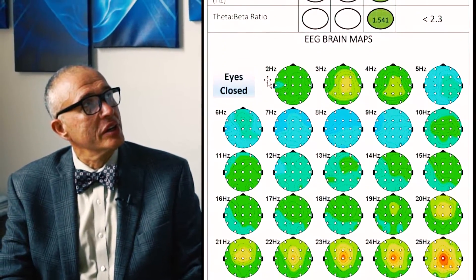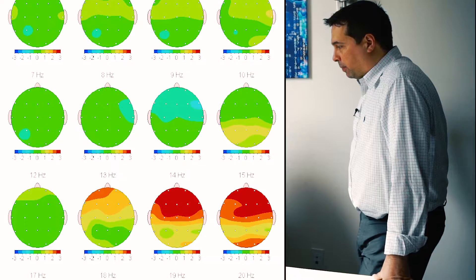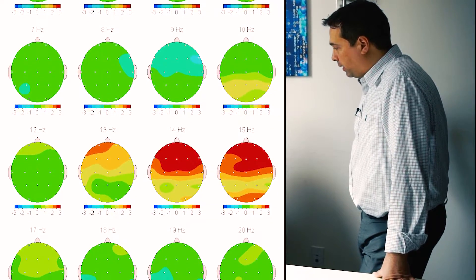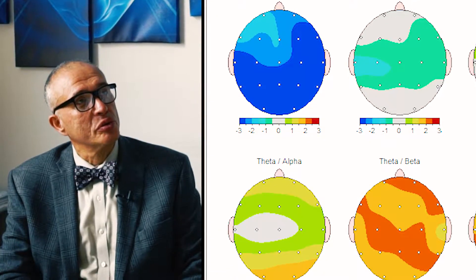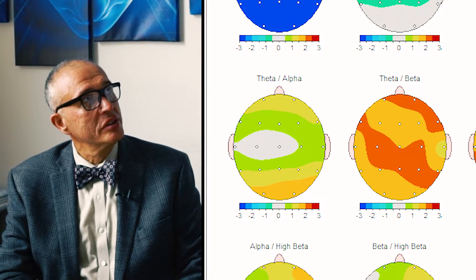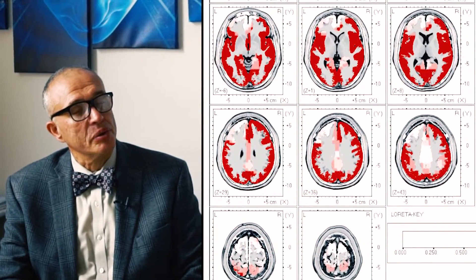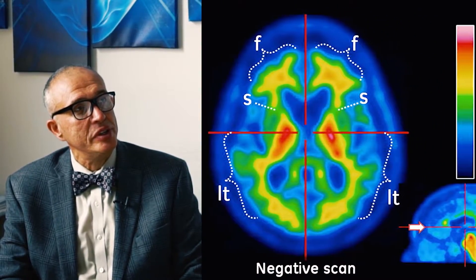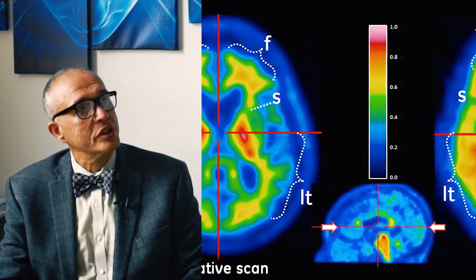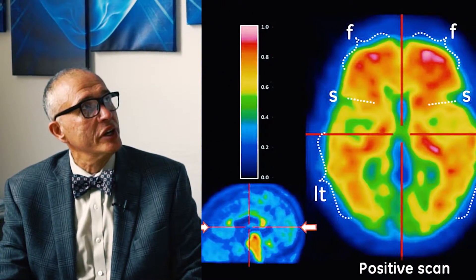Let's talk about what quantitative EEG is good for. It gives us a picture of brain function via EEG, as opposed to brain structure, which we can get from a regular MRI. Some people think about CAT scan, but a CAT scan actually shows only major problems. Another popular option is SPECT — S-P-E-C-T — which shows how blood flows to different parts of the brain.